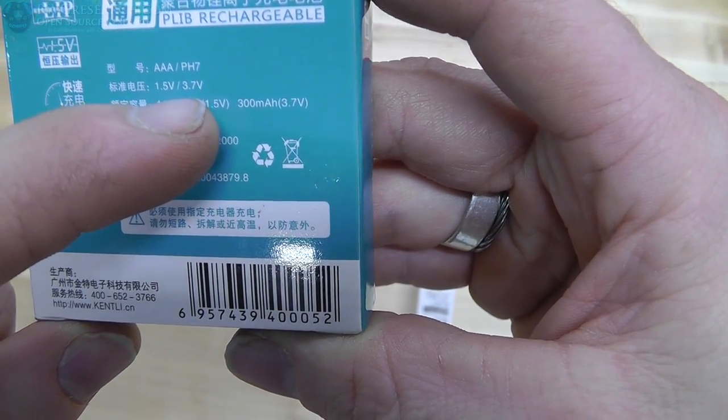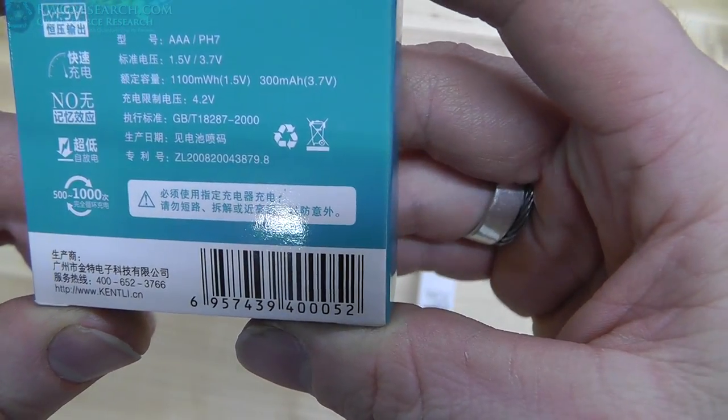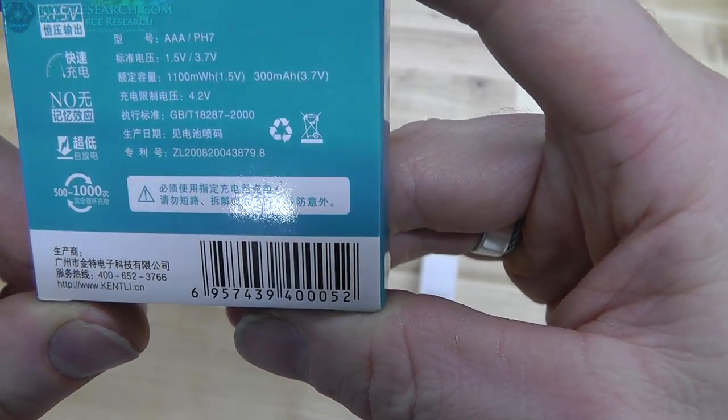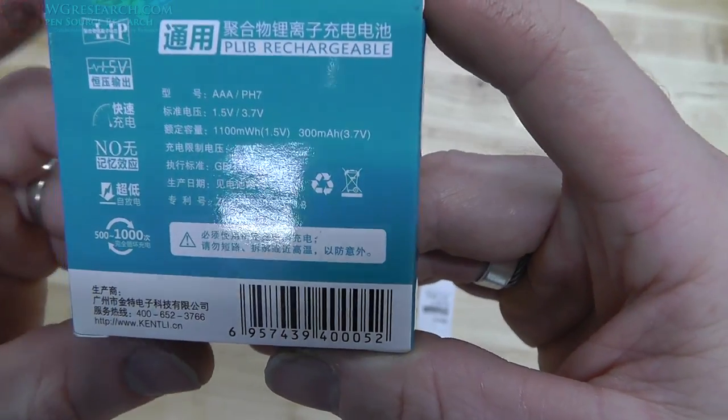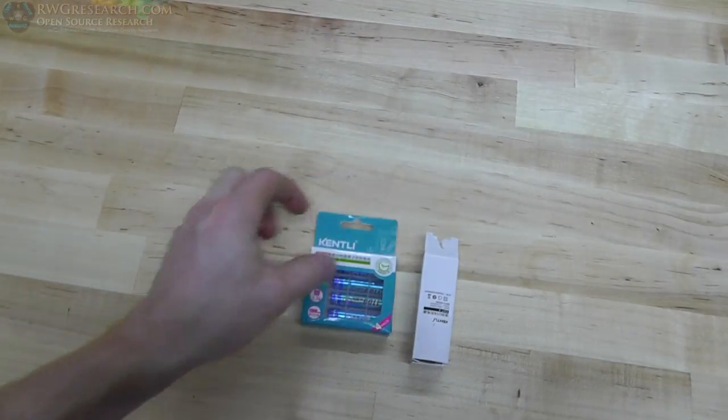Here it's got 1.5-slash-3.7-volt, AAA, or PH-7. I presume that's the other type of size this is. I'm not sure. But I found that very interesting. I was like, what? 3.7, but they're 1.5. So now I was a little confused.